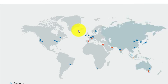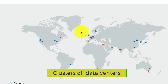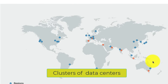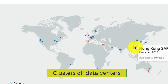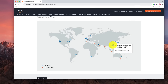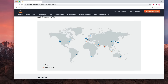You get the idea — AWS has regions all across the world. Again, the region is basically a cluster of data centers. Whenever you hear AWS Region, think of it as clusters of data centers. That's the whole concept.